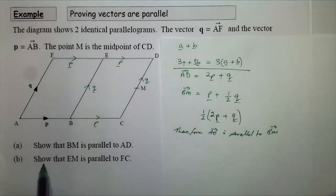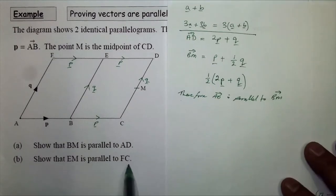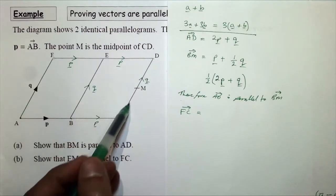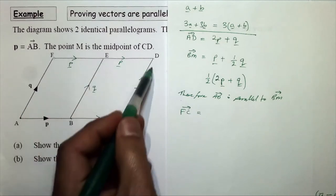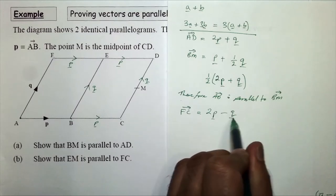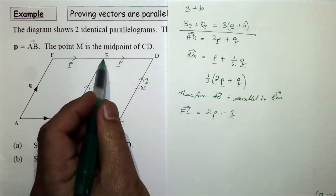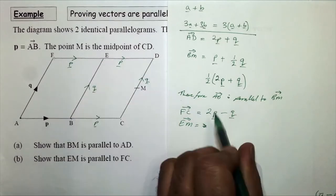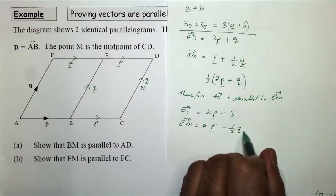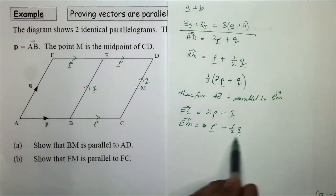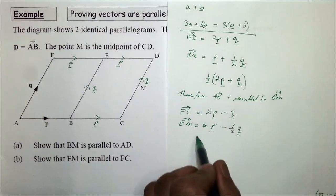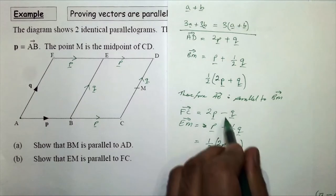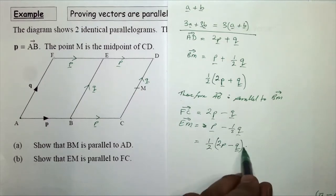For the second part, I start with vector FC. FC equals 2p minus q, going in the opposite direction, so FC = 2p minus q. Then EM equals vector p minus one half q. Factorizing: EM = ½(2p minus q). Therefore FC and EM are parallel because they both go in the direction of 2p minus q.